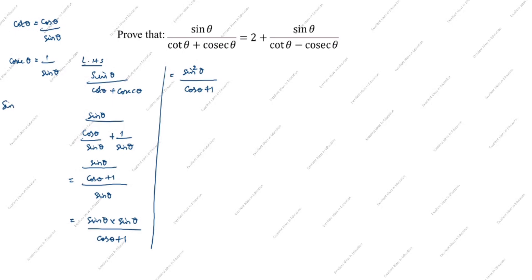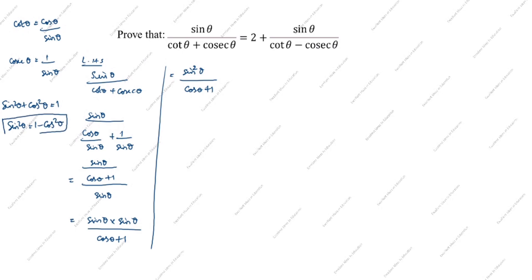Now, sin²θ plus cos²θ equals 1. We need sin²θ, so we rearrange: sin²θ equals 1 minus cos²θ. This is the formula we will use. So we split: equal to (1 minus cos²θ) divided by (cos θ plus 1).